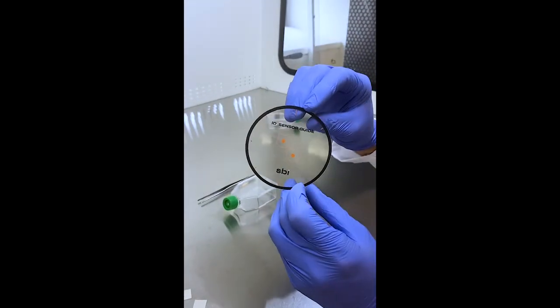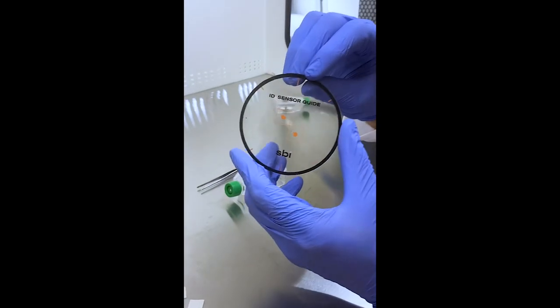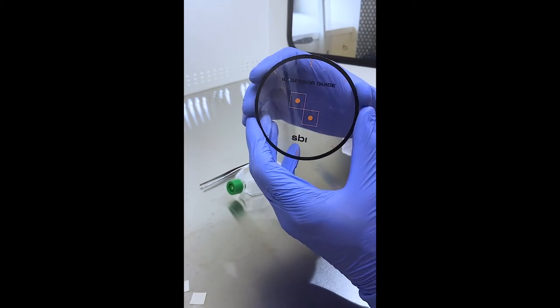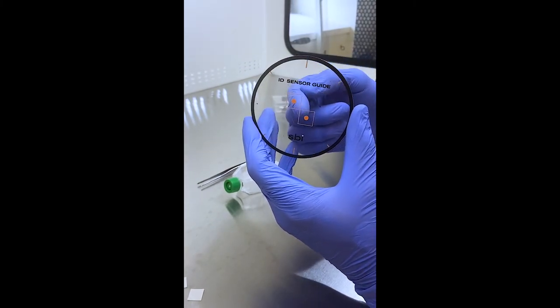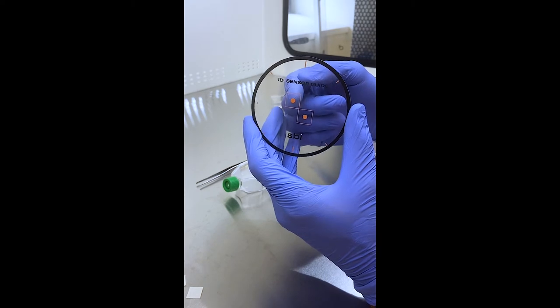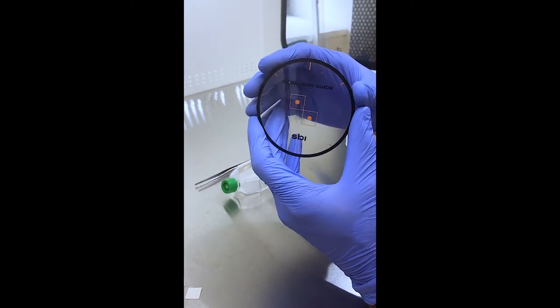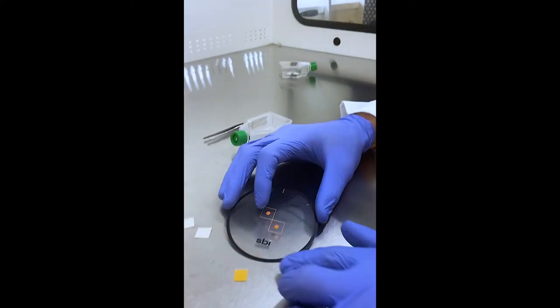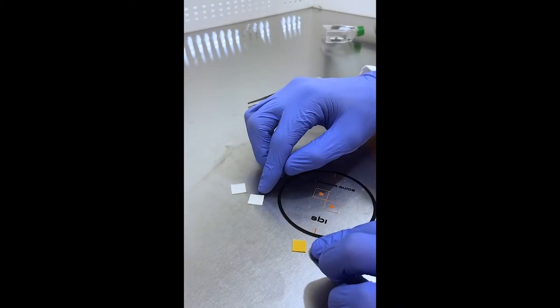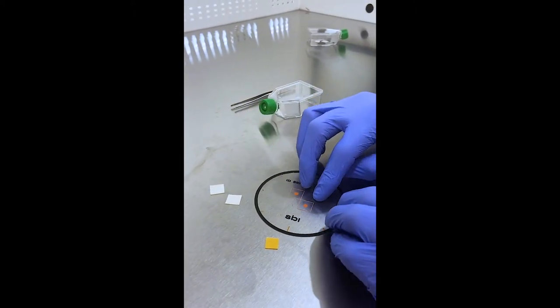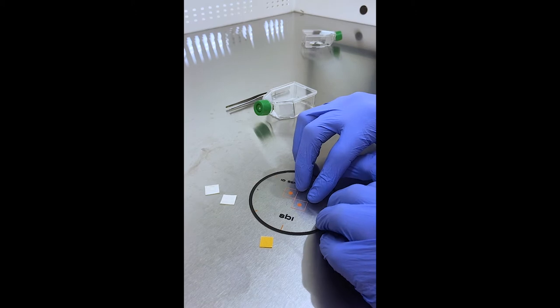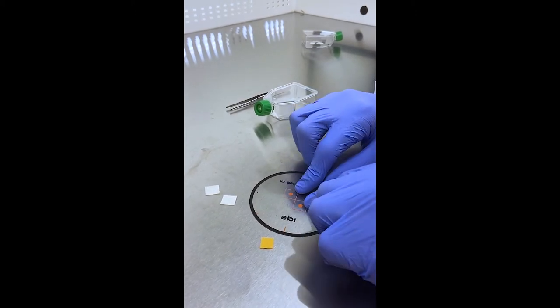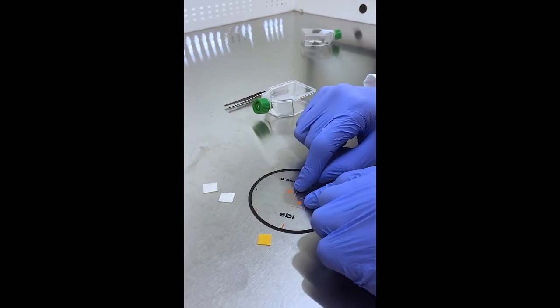Now the ID sensor guide is very important. This tool is a template of the top of the ID reader. And these two orange targets here represent the two different LEDs that are on the reader. The purpose of this device is to help you place both the dissolved oxygen and the pH sensor and align them properly relative to one another so that both of the LED lights on the ID reader can ultimately hit the sensor patches at the same time.